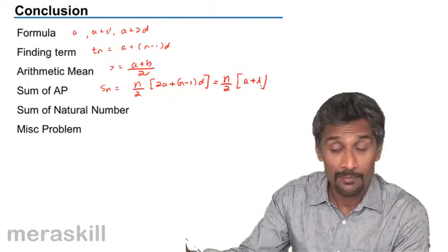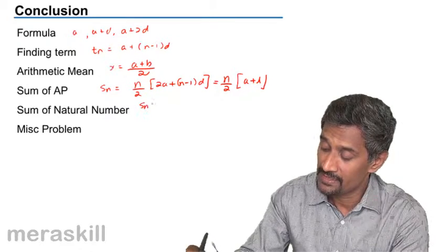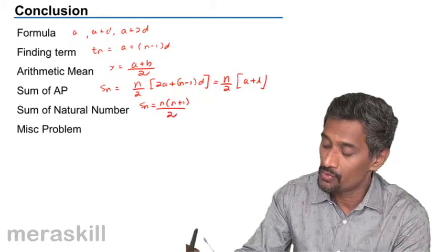Sum of natural numbers, that is Sn = n(n+1)/2.